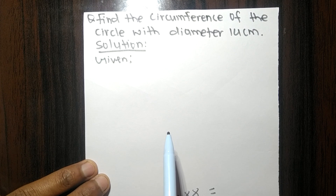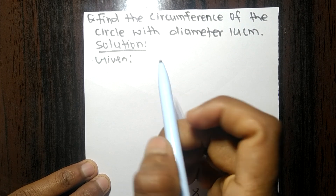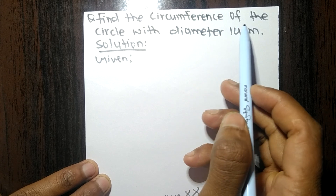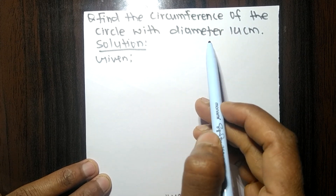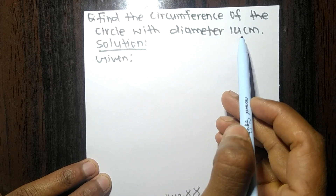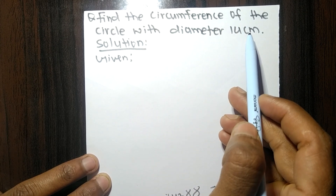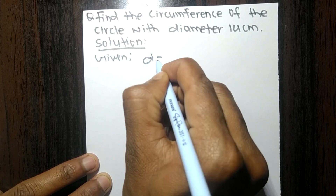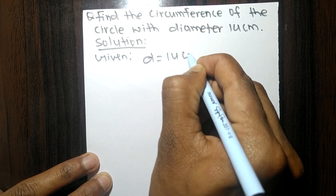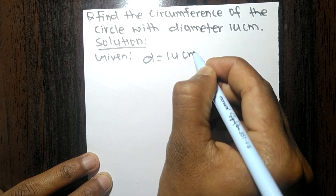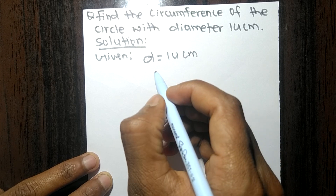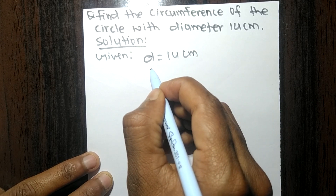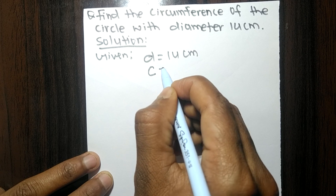Today we shall find the circumference of a circle with diameter 14 centimeters. We are given diameter equals 14 centimeters and we need to find its circumference.